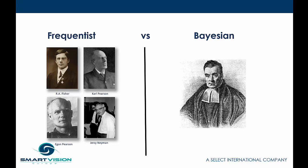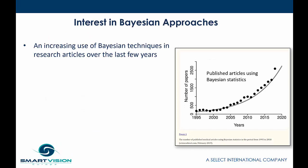You might be wondering why we're even talking about the Bayesian approach, particularly since we already have a functionally rich frequentist approach. One reason is simply the increasing usage of Bayesian techniques in research articles — they've become much more popular in recent years and decades in research and academic arenas. One possible reason for this is advances in computing technology: Bayesian approaches have typically required more computing power, so the frequentist tradition had a head start. As a result, the first techniques integrated into tools like SAS and SPSS were frequentist approaches.